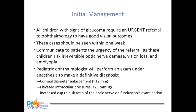A pediatric ophthalmologist can perform an exam under anesthesia to make a definitive diagnosis and take the necessary steps towards treating this condition. Specialized assessments include corneal diameter enlargement over 12 millimeters measured with a caliper under topical or general anesthesia, elevated intraocular pressures over 21 mmHg measured under general anesthesia, and an increased cup-to-disc ratio of the optic nerve on fundoscopy indicating damage to the optic nerve and death of nerve fibers.